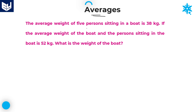The average weight of 5 persons sitting in a boat is 38 kgs. If the average weight of the boat and the persons sitting in the boat is 52 kgs, then what is the weight of the boat?